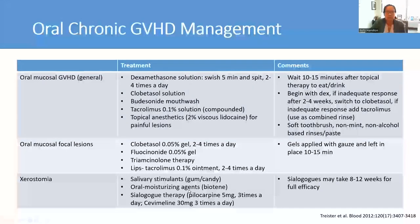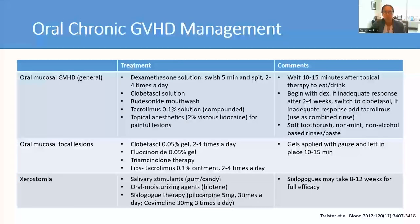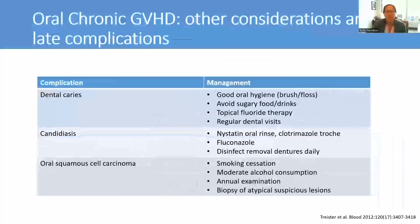Management of oral chronic GVHD can be divided into general care of the oral mucosa, spot treatment of focal lesions, and general agents to help with xerostomia or dry mouth such as salivary stimulants. Topical corticosteroids are really the mainstay of therapy and can be very effective in reducing mucosal inflammation when used correctly — patients must rinse diligently for a prolonged period. Patients with oral chronic GVHD are also at high risk of cavities, infections such as candidiasis, and oral cancers. Attention to good oral hygiene, regular dental follow-up, identification and management of infections, and prompt recognition and biopsy of any suspicious lesions are all important considerations in long-term management.